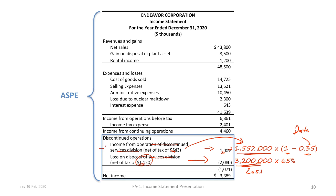The correct disclosures are: income from operation of discontinued services division (net of tax) of $1,009,000, and loss on disposal of the services division (net of tax) of $2,080,000, with a tax benefit of $1,120,000. The discontinued operation between the additional profit of operating the services division and the loss on disposal produced a net after-tax loss of $1,071,000. The final result is net income overall for the entire company of $3,389,000.